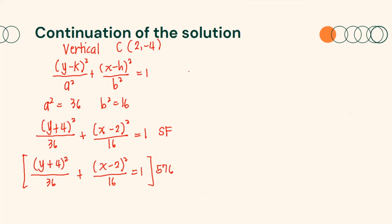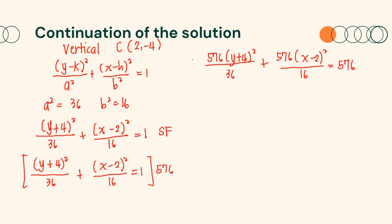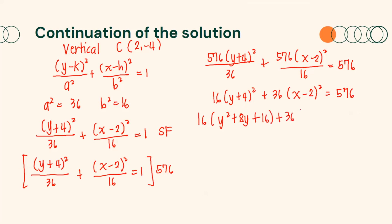Therefore, we will have 576 divided by 36 times (y + 4)² plus 576 divided by 16 times (x − 2)² equals 576. Dividing, we get 16(y + 4)² plus 36(x − 2)² equals 576. Simplifying the squared binomials, we get 16(y² + 8y + 16) plus 36(x² − 4x + 4) equals 576.